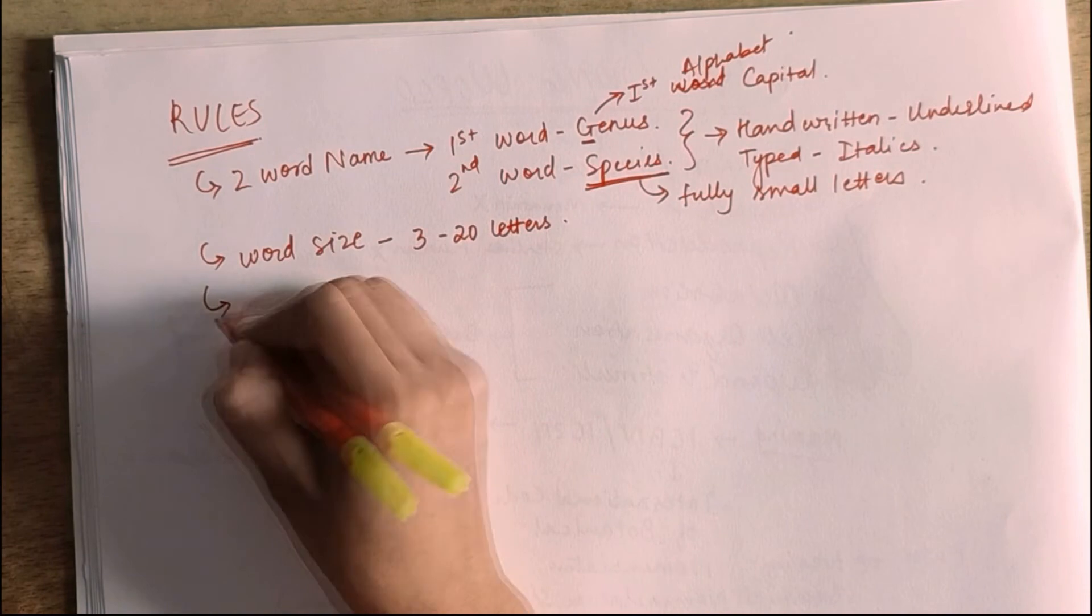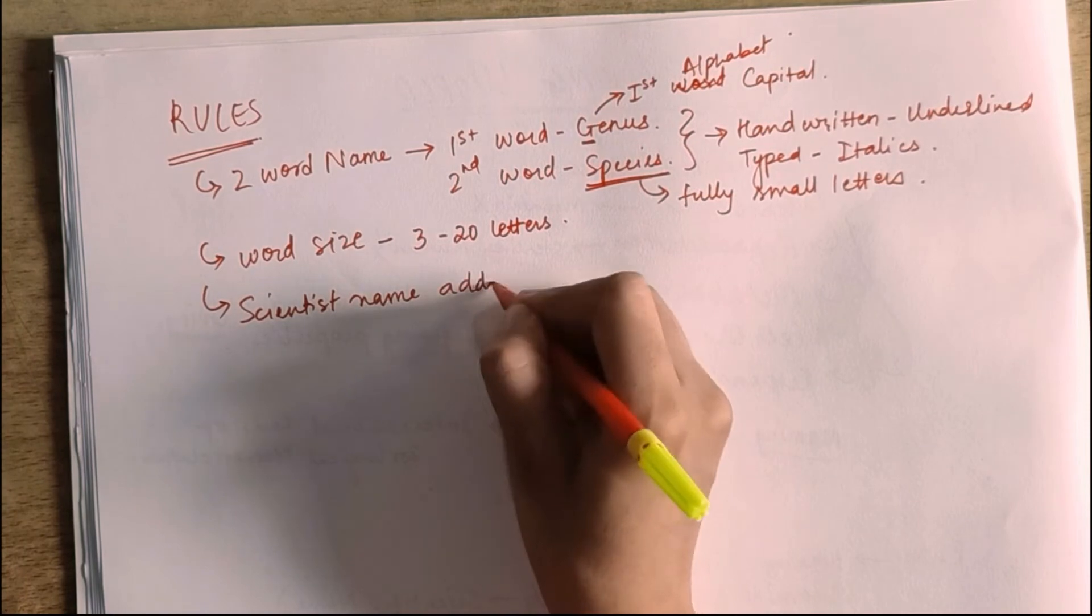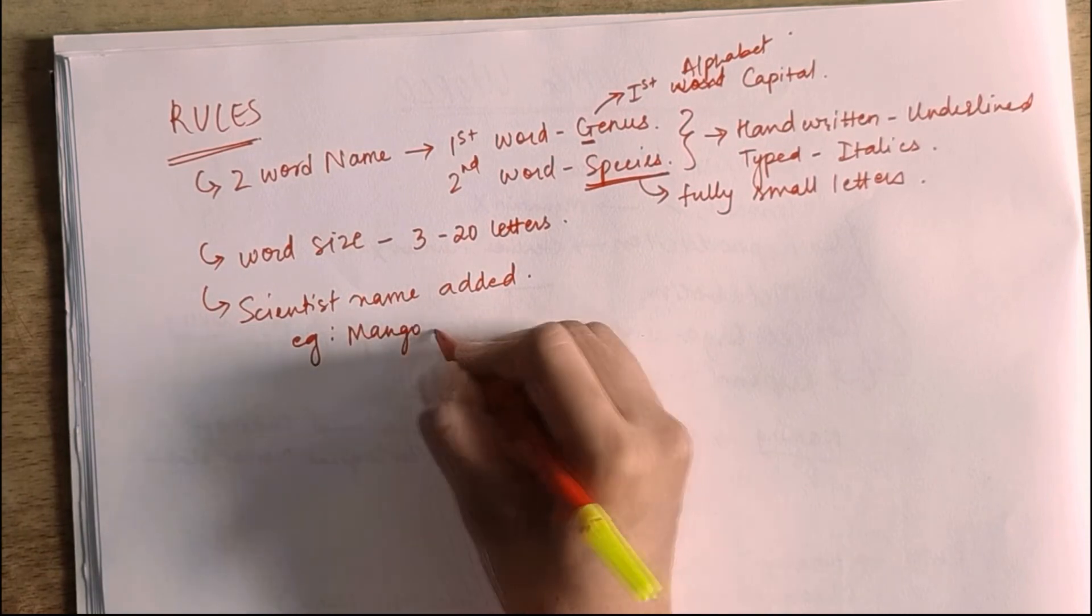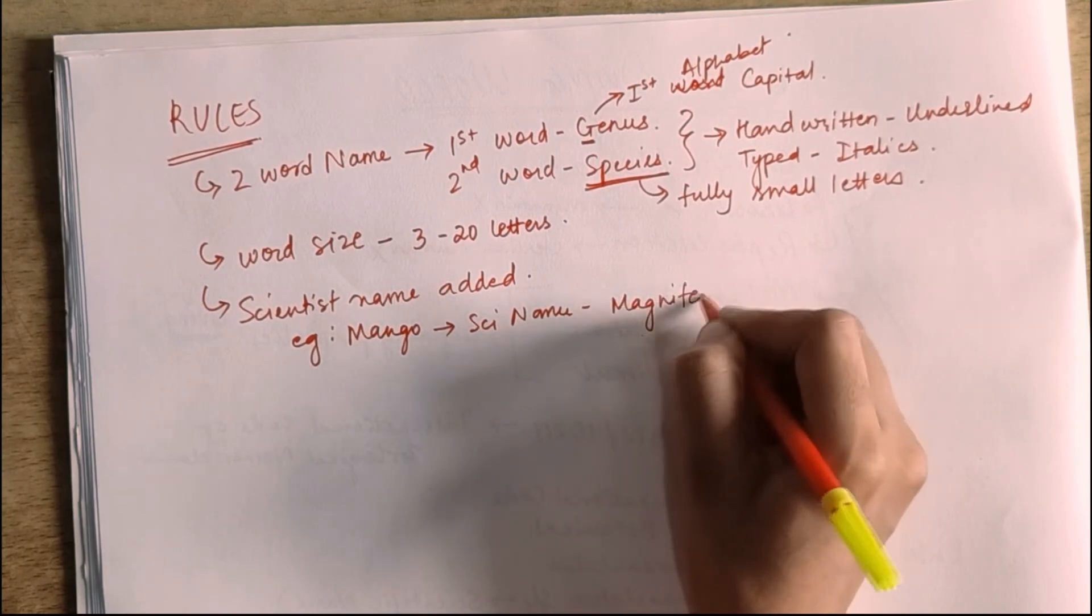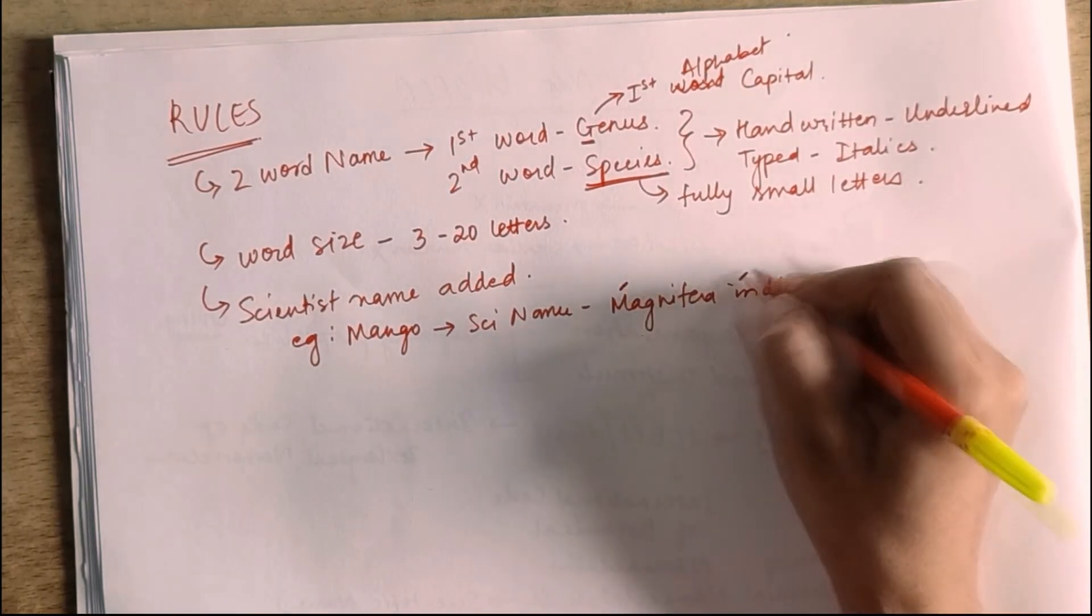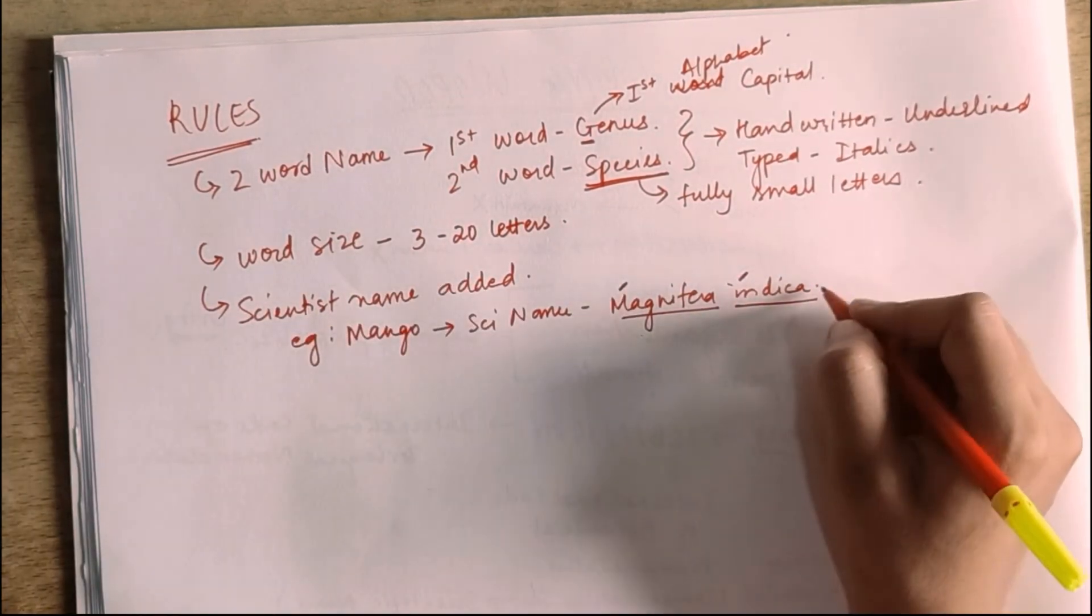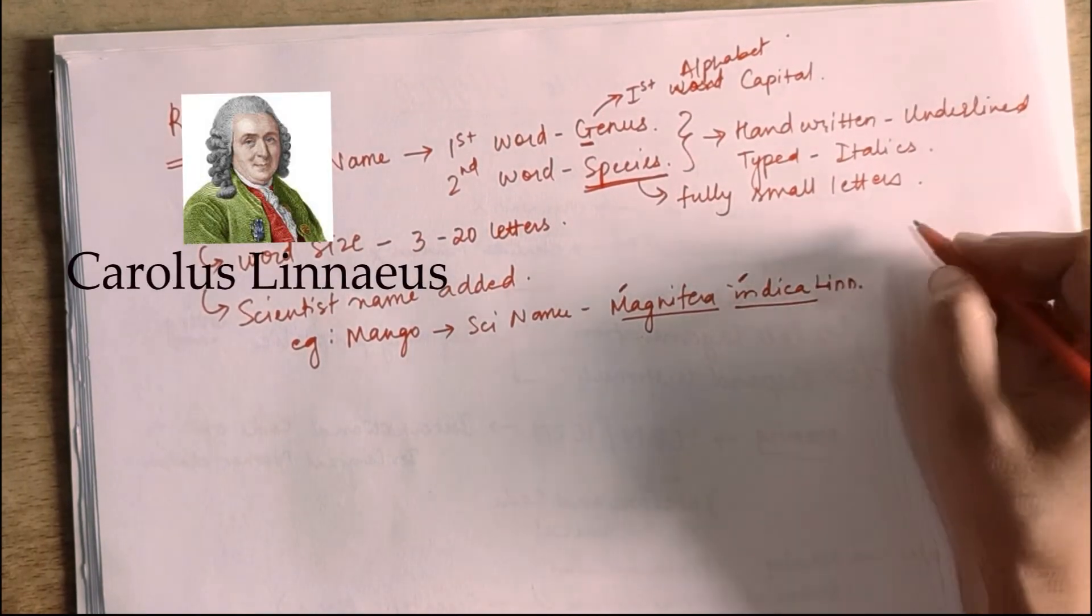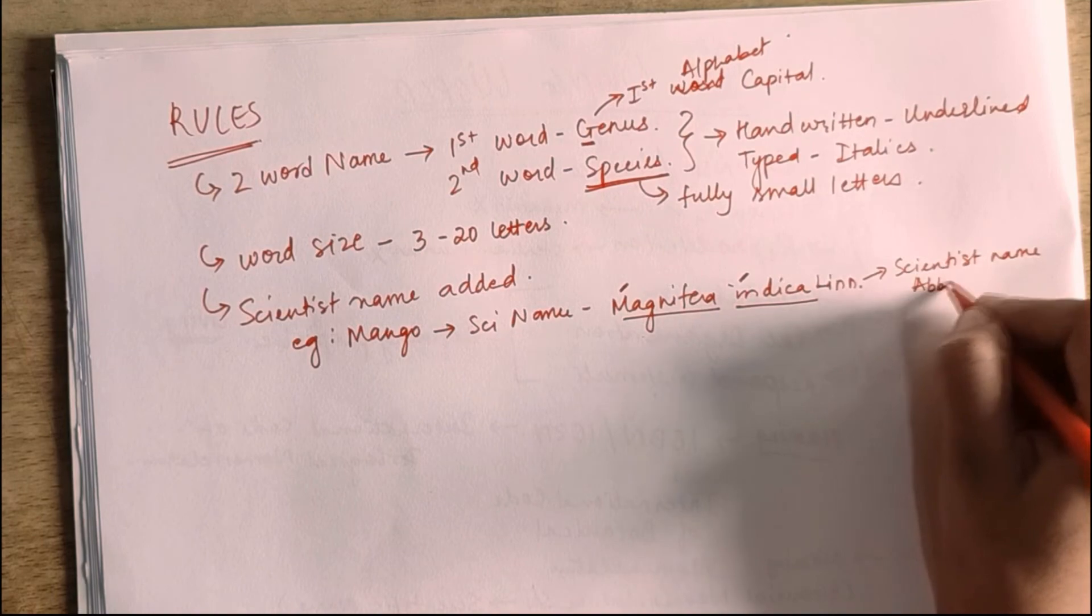And the name of species, we have fully in small letters. In scientific name, we can add the name of the scientist. Example, if we take mango, its scientific name is Mangifera Indica. The first letter is capital, the second is small. Now it is handwritten, this is why it will be underlined. And if we add a scientist's name, the scientist's name was Carlos Linnaeus, then we can use the last name Linn, because the scientist's name is abbreviation, short form.